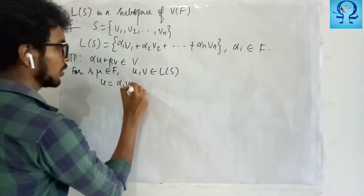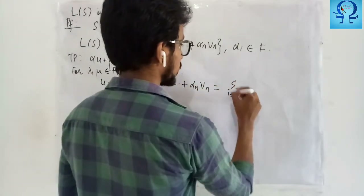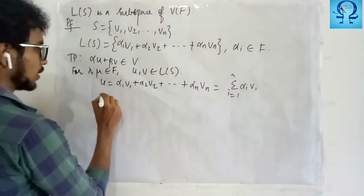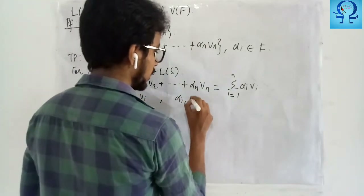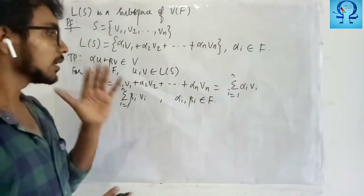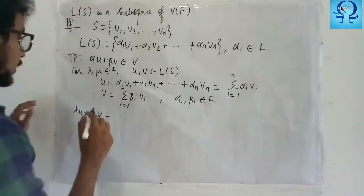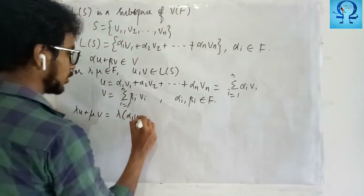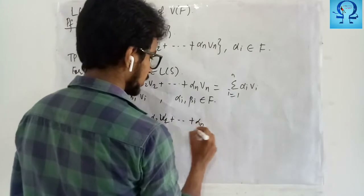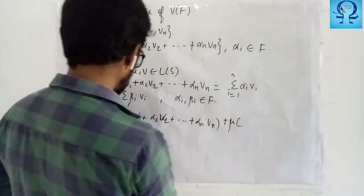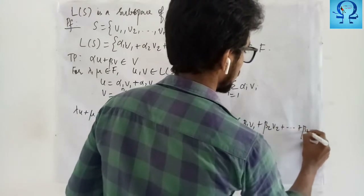So u equals the summation from i equals 1 to n of alpha_i·v_i, and V equals the summation from i equals 1 to n of beta_i·v_i, where alpha_i and beta_i are taken from F. Now I have to evaluate lambda·u plus mu·v. That gives lambda times (alpha_1·v1 plus alpha_2·v2 plus ... plus alpha_n·vn) plus mu times (beta_1·v1 plus beta_2·v2 plus ... plus beta_n·vn).